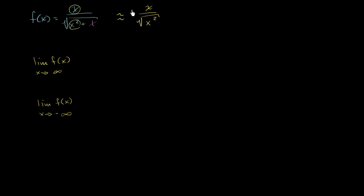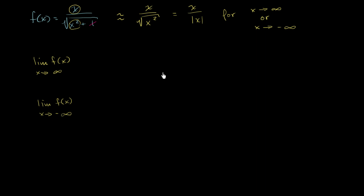So x over the square root of x squared, or x over the principal root of x squared — if you square something and then take the principal root, remember the principal root is the positive square root, so you're essentially taking the absolute value of x. It's going to be equal to x over the absolute value of x, whether x approaches positive infinity or negative infinity. So we can restate these limits as the limit as x approaches infinity of x over the absolute value of x.